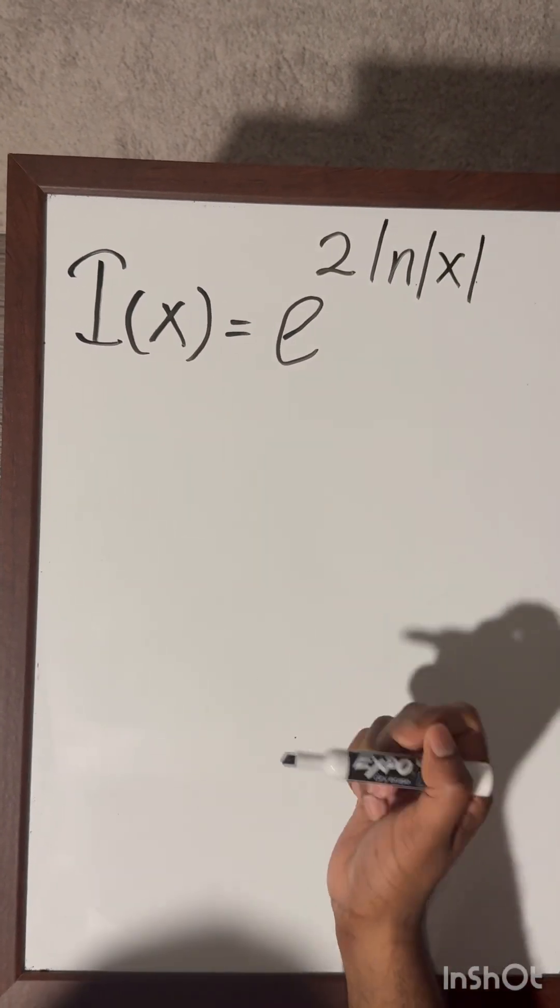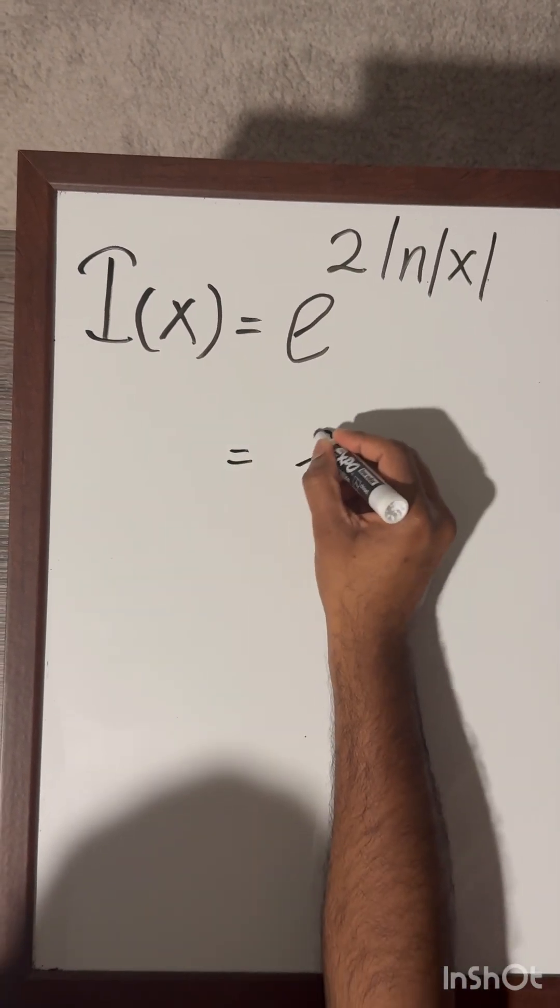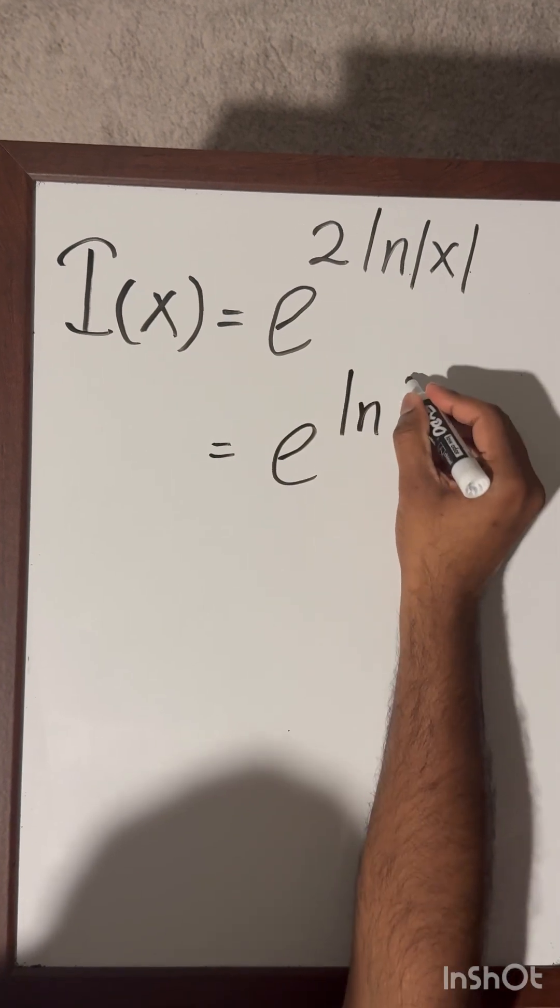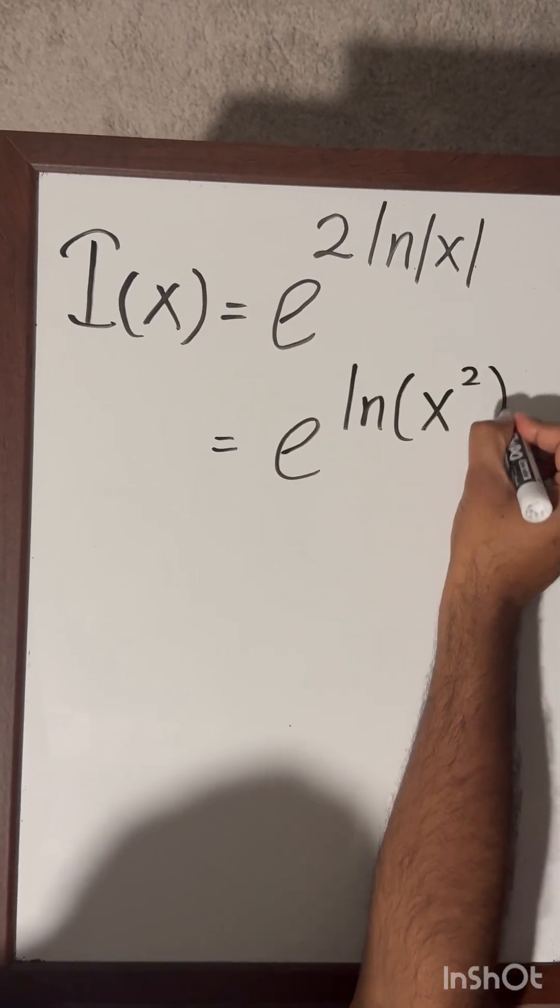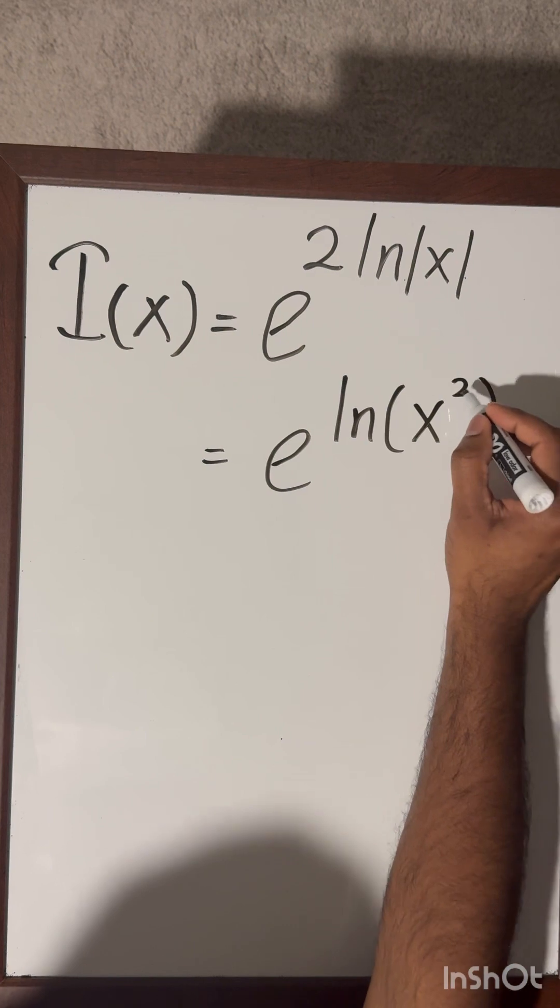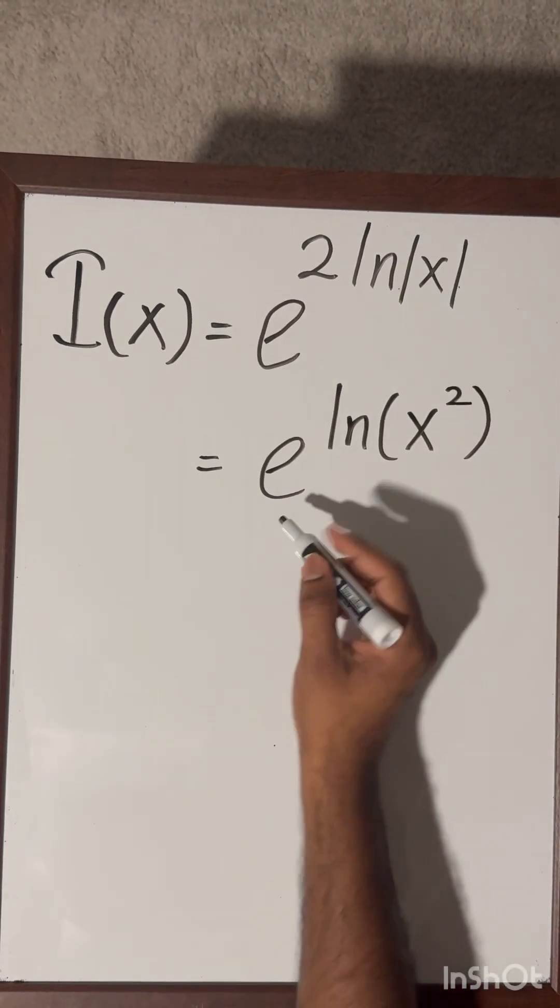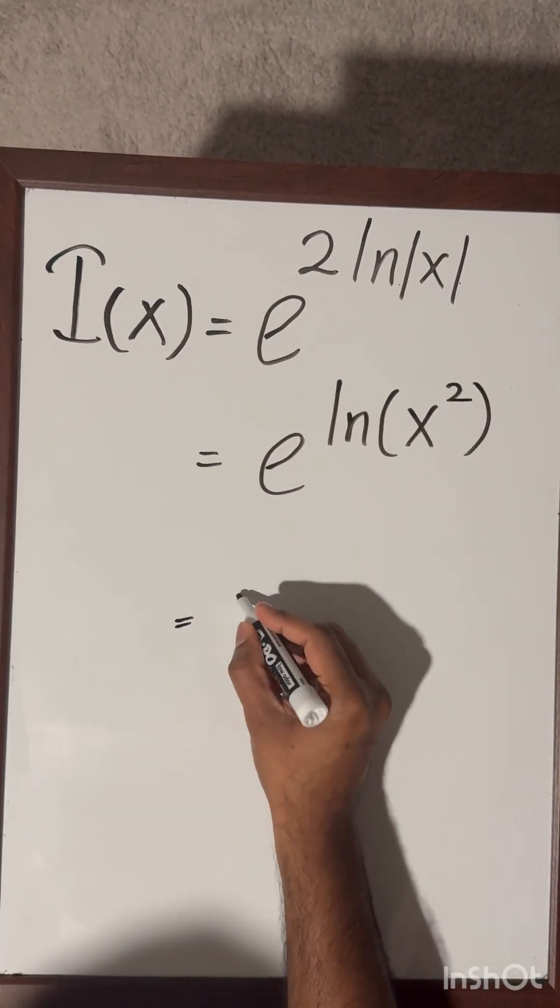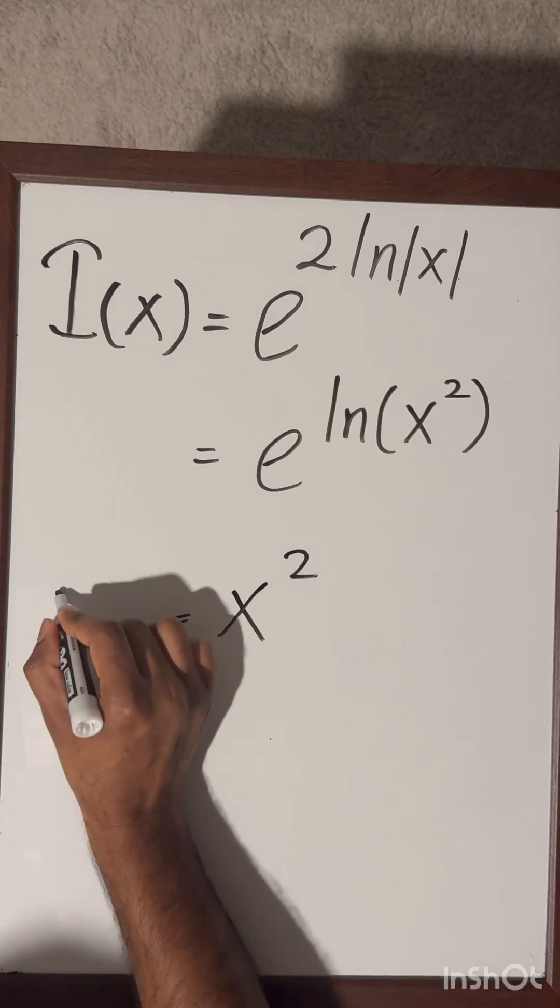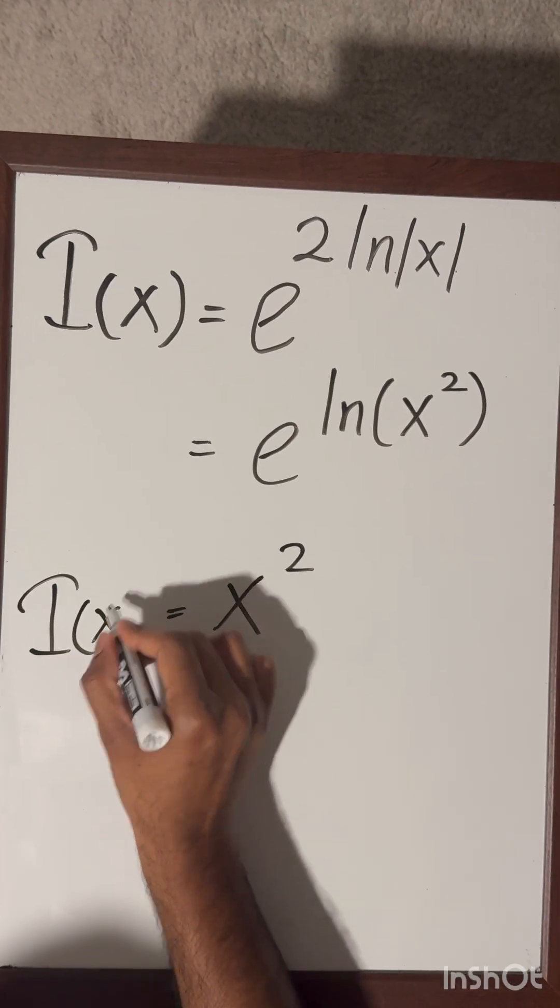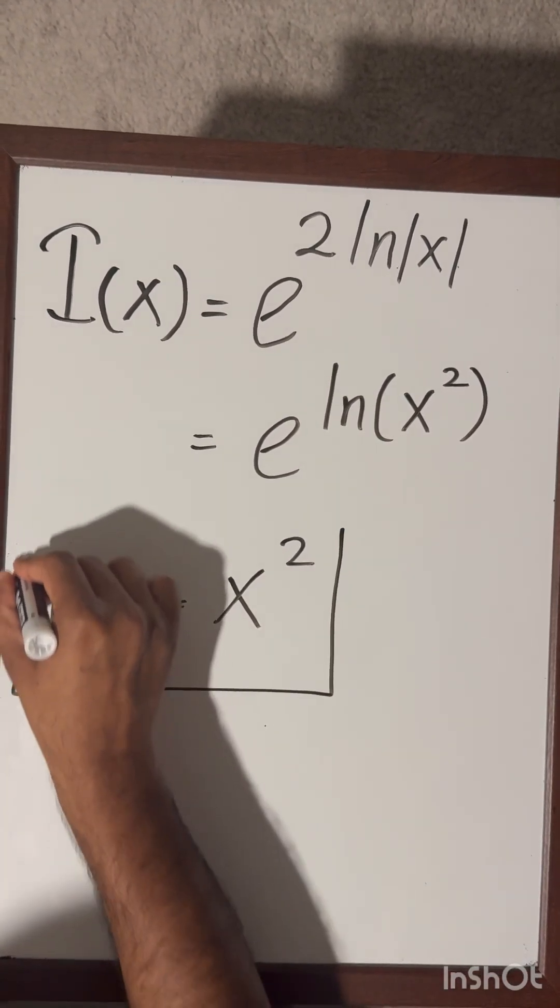Remember in this case we ignore the integral constant. Now I am going to use some properties of a log function. We can bring this 2 as a power and write down e to the power ln of x squared, which equals x squared.